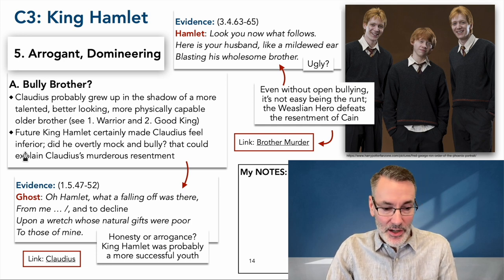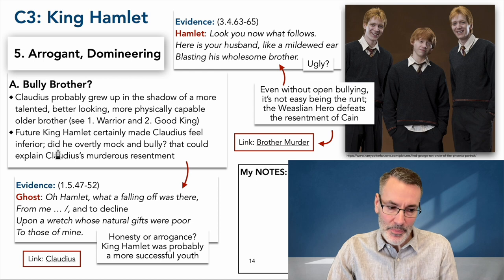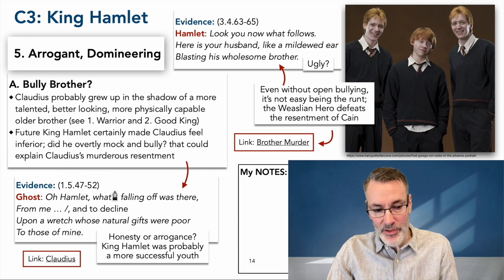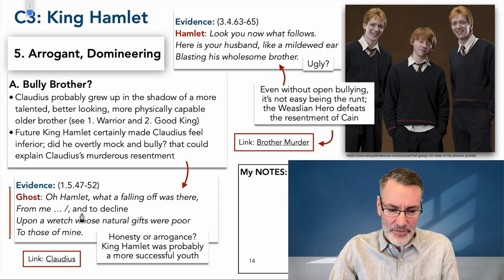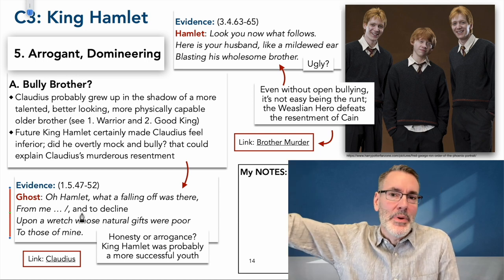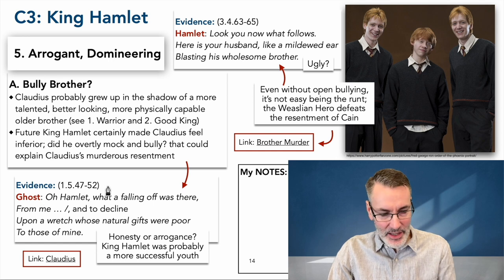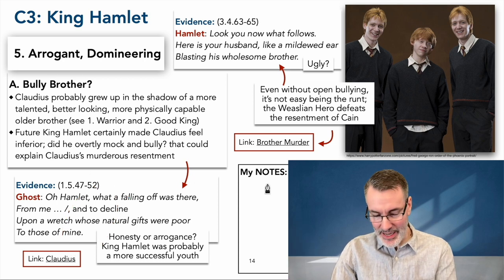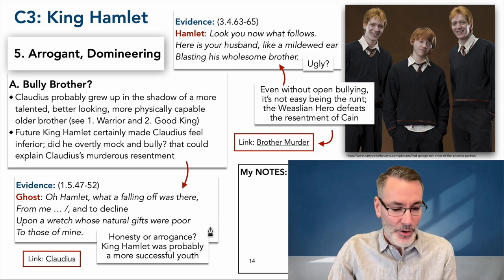The future King Hamlet certainly made Claudius feel inferior — certainly. Even if King Hamlet was a good older brother, the younger brother certainly felt inferior. But did the older brother overtly mock and bully? That could explain Claudius's murderous resentment. The ghost says to Hamlet: 'What a falling off was there from me — she declined upon a wretch whose natural gifts were poor to those of mine.' If in life the older brother made those feelings known to the world in front of the younger brother, then yeah, you understand where the resentment comes from. Is this honesty or sheer arrogance? King Hamlet was probably certainly the more successful, more liked older brother.